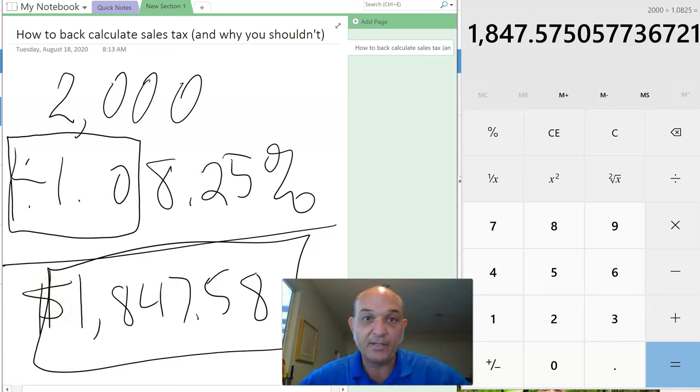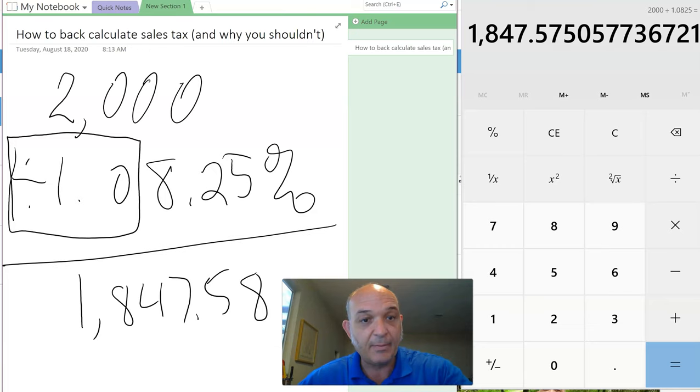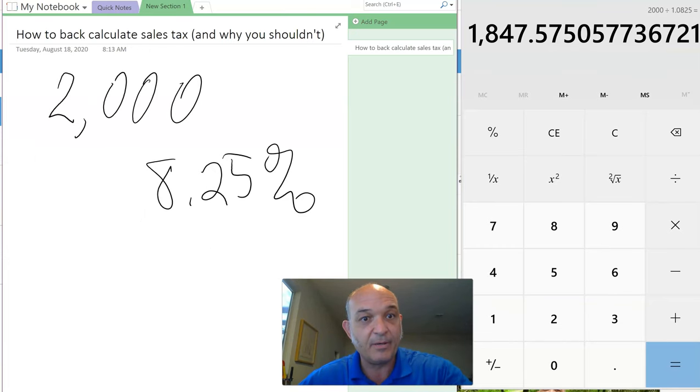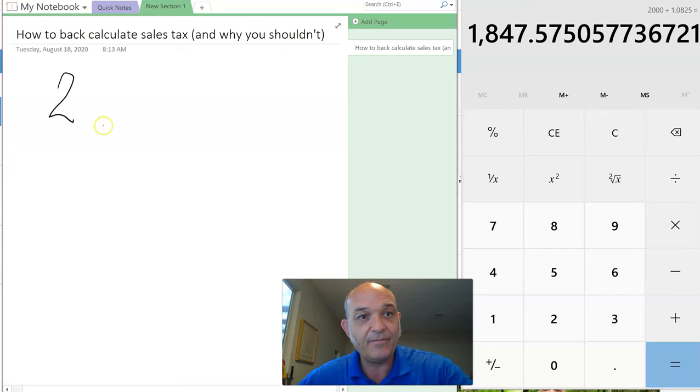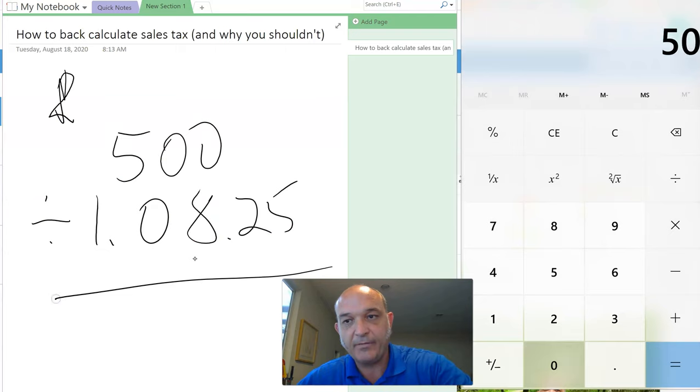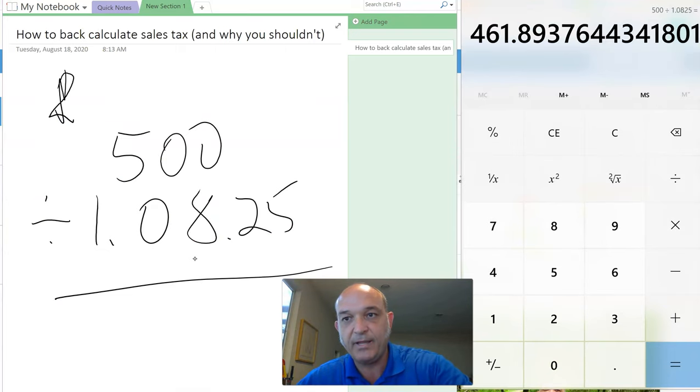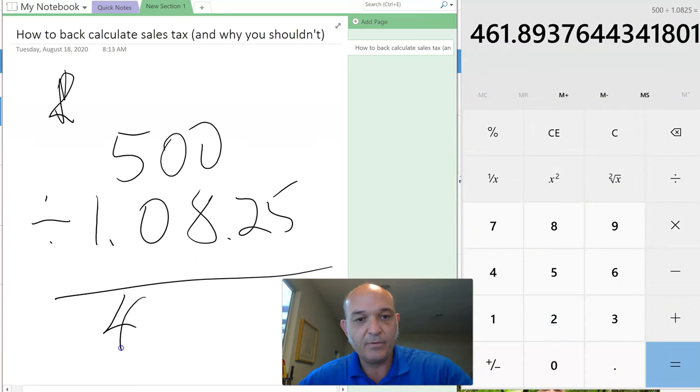Last example, this is a very common number. It'll be an additional $500. $500 divided by 1.0825 equals $461.89. So you have a $462 sale.